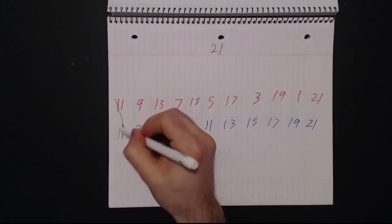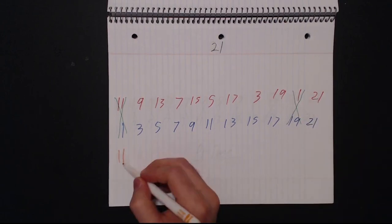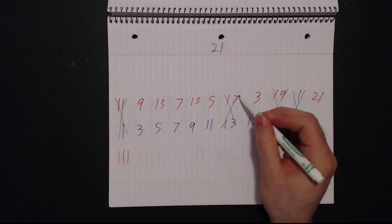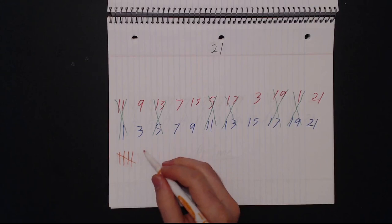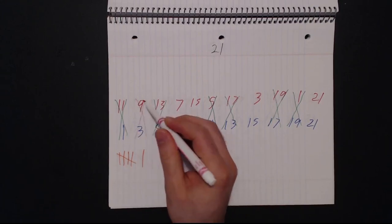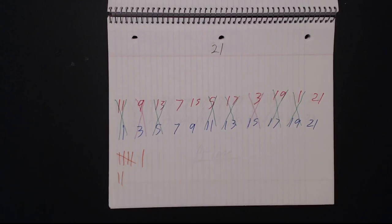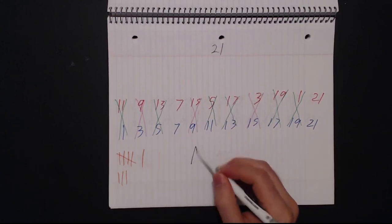Let's do another example with 21. We hit the beginning here again, so we have to start on the next column. We hit the beginning again. However, the tick marks don't match. This is how we know this is not prime.